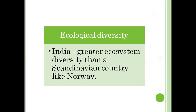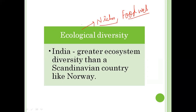Moving on to ecological diversity — what is ecological diversity? It is a variety of ecosystems which indicates diversity in the number of niches, trophic levels, food webs, food cycles, nutrient levels, and ecological processes. The variety in these elements found in ecosystems results in ecological diversity.